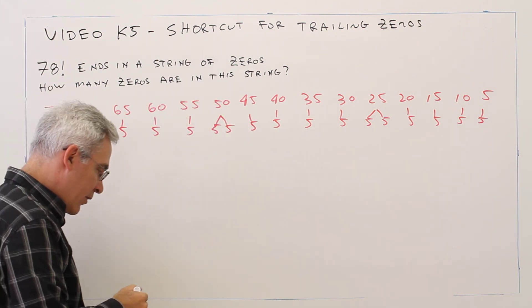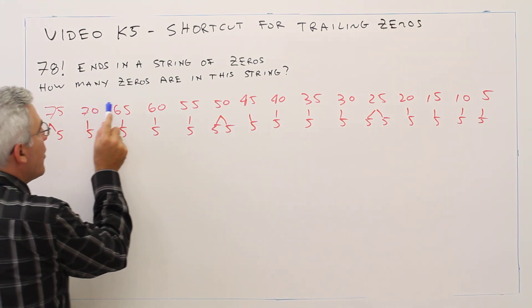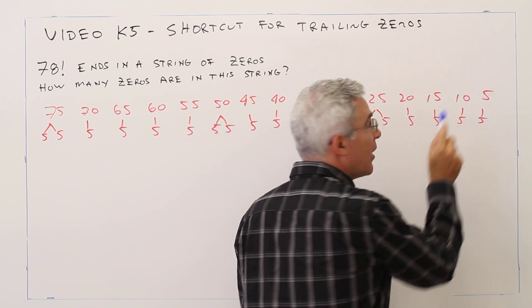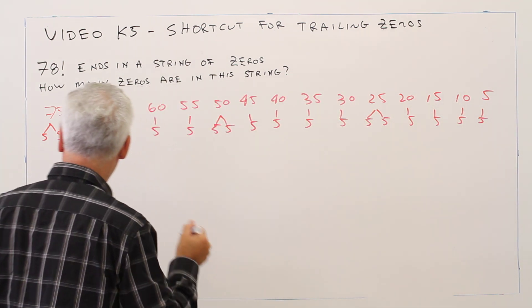Alright, so just to emphasize, I've got 1, 2, 3, 4, 5, 6, 7, 8, 9, 10, 11, 12, 13, 14. I've got 15 numbers that had at least one factor of 5.